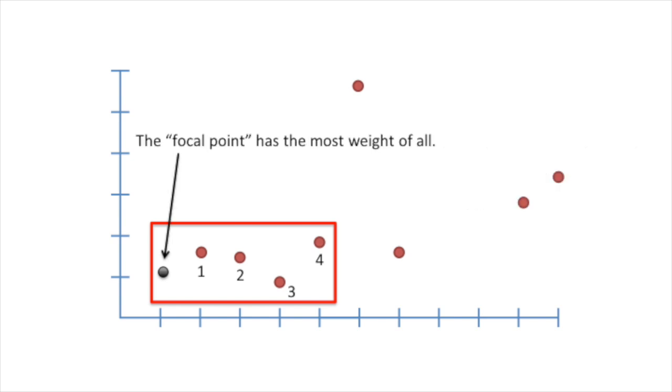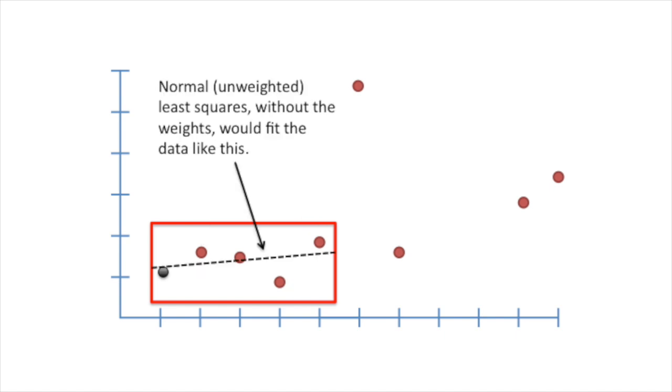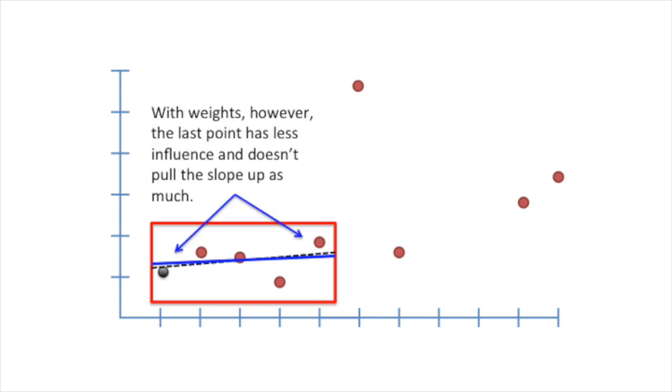The focal point has the most weight of all. The closest point has the second most weight. The furthest point has the least weight. Normal, unweighted least squares without the weights would fit the data like this. With weights, however, the last point has less influence and doesn't pull the slope up as much.